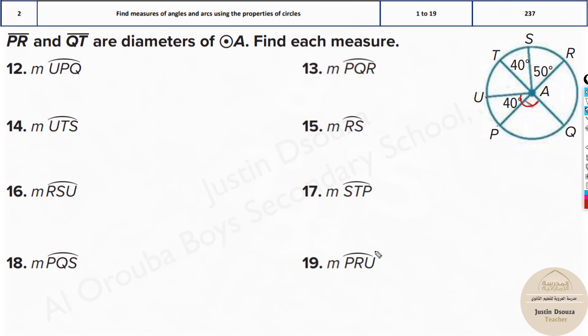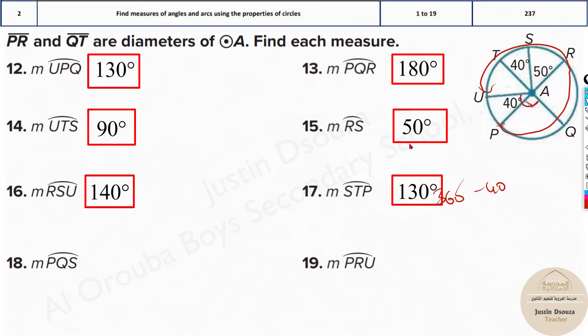Same way do the others. I'll do one more, the last one. PRU. Don't go like this because they have told U. So we have to go like this. PRU. Now we know the total circle is 360 minus the remaining part 40. So it must be 320 here. All the others are very straightforward. Please do try them by yourself and then check the answers. 360 minus 40 is 320.